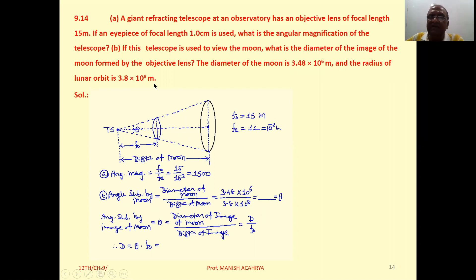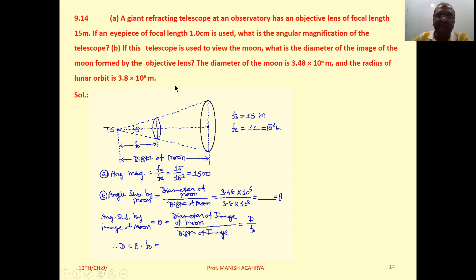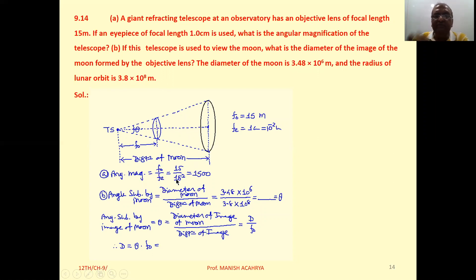Angular magnification — that is Fo upon Fe, as discussed in the telescope theorem, very simple. Fo is given as 15 meters, Fe is 1 centimeter, that is 10 raised to minus 2 meters. So angular magnification = 15 / 10⁻² = 1500.